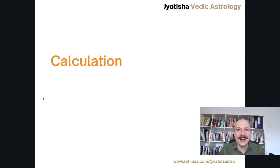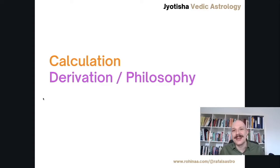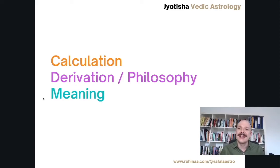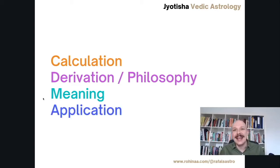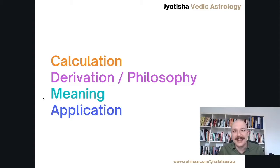First is the calculation — we need to understand where the astrological objects are placed. Then we need to understand the derivation, why they are placed in such places. This is often related to some kind of order, and that order has some meaning. From this meaning we derive an abstract understanding, and then we go to application — how these abstract astrological patterns are manifesting in our individual, specific, tangible life.